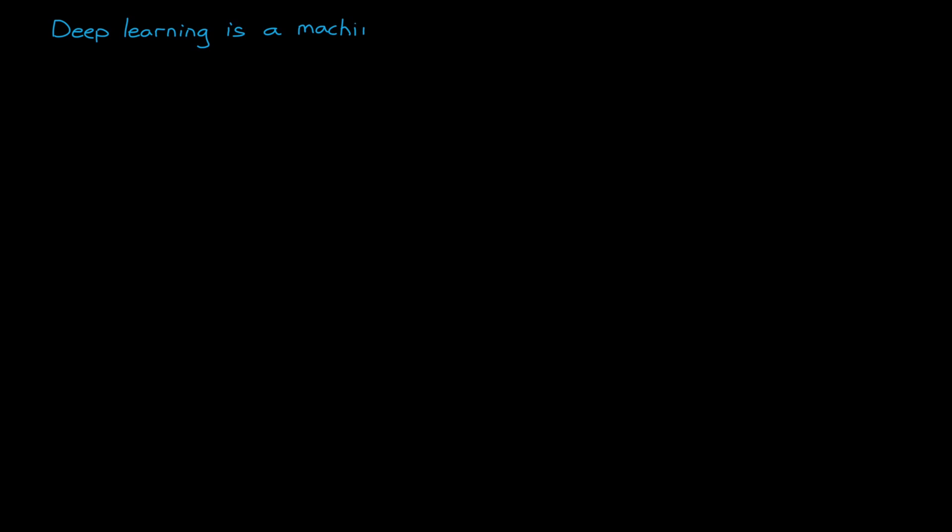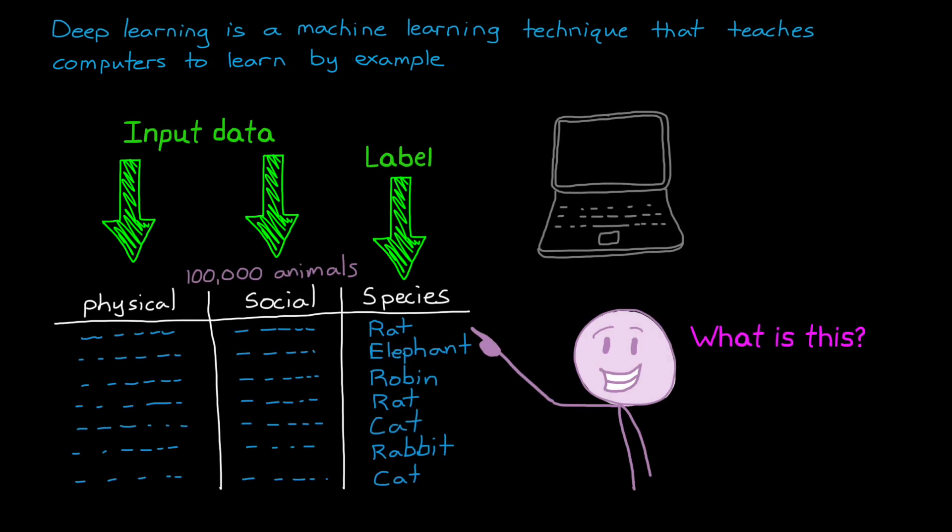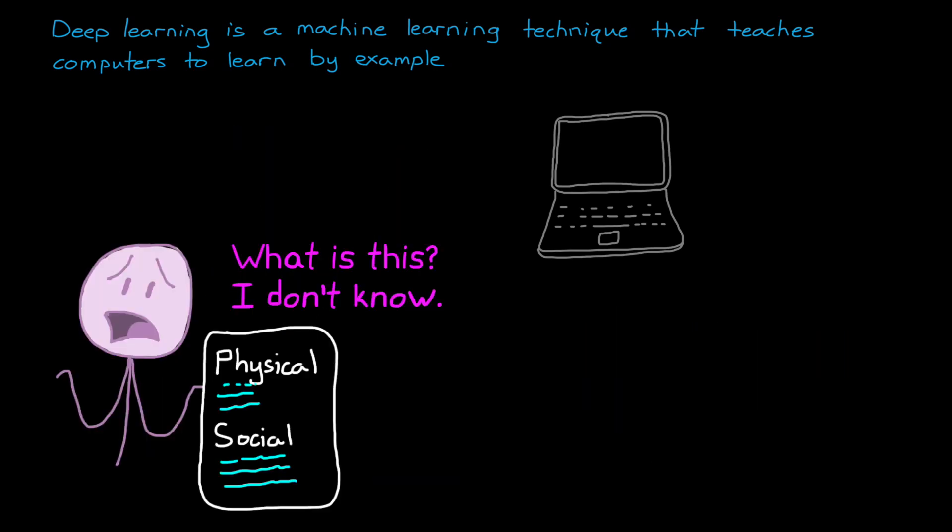At a really high level, deep learning is a machine learning technique that teaches computers to learn by example. Specifically, we're teaching a computer how to perform some classification task by exposing it to known scenarios and having it automatically adjust its model depending on whether it produced the right response or not. Once we have a sufficiently trained model using enough labeled data, we could input data that we haven't classified yet, and the model will apply the most probable label to it.